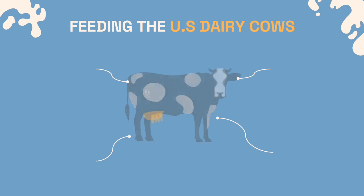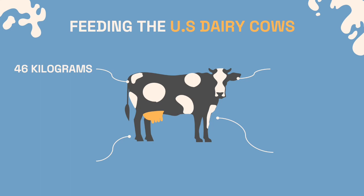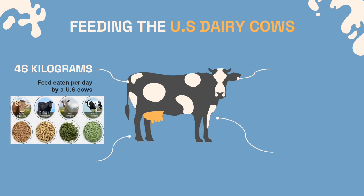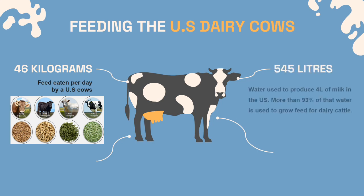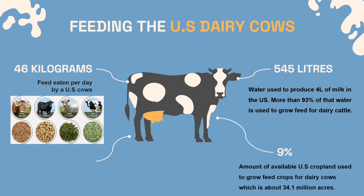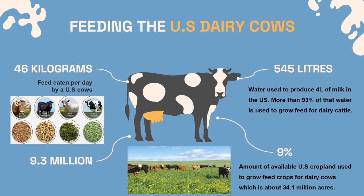Feeding the US dairy herds requires 144 gallons of water to produce one gallon of milk in the US, with more than 93% of that water used to grow feed for dairy cattle. Dairy cows eat about 46 kilograms of feed per day. A total of 545 liters of water is used to produce 4 liters of milk. Roughly 9% of available United States cropland — about 34.1 million acres — is used to grow feed crops for dairy cows. There are about 9.3 million dairy cows in the US alone.